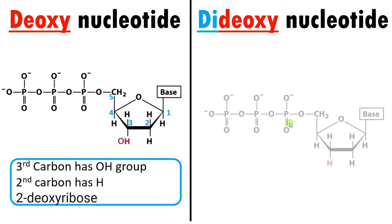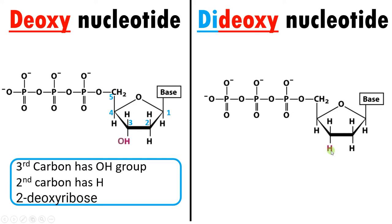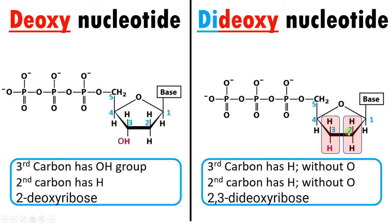Now let us move to dideoxynucleotide, which is used in Sanger's procedure. In dideoxynucleotide, as the term indicates, 'dideoxy' means oxygen is absent at two positions — at the second carbon position and at the third carbon position — making it 2',3'-dideoxyribose. It is called dideoxy because 'di' means two: two oxygens are absent at the second and third carbon positions, whereas in deoxynucleotide oxygen is absent only at the second carbon position.